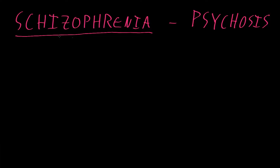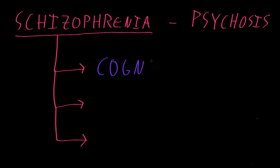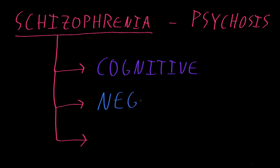The abnormalities of schizophrenia are often divided into three big categories. The first of these are called cognitive symptoms, and there can be all sorts of cognitive symptoms with schizophrenia, such as abnormalities of attention, organization, or things like planning abilities. The second big category are often called the negative symptoms, and these can include things like blunted emotions or a loss of enjoyment in activities.